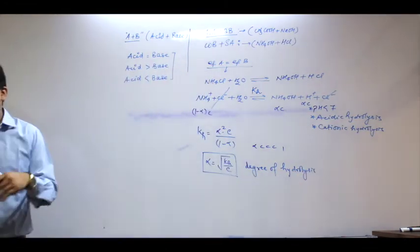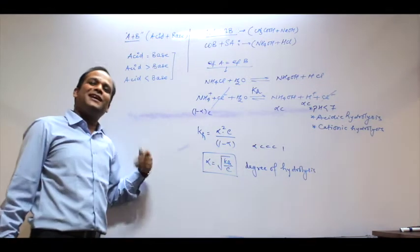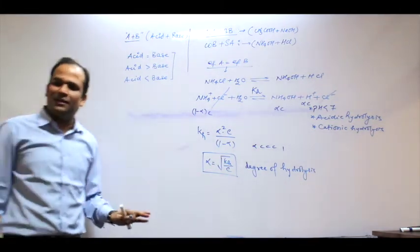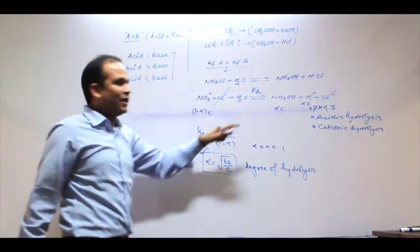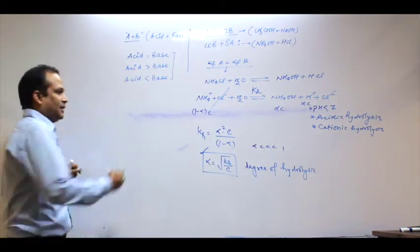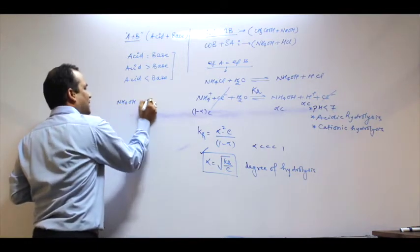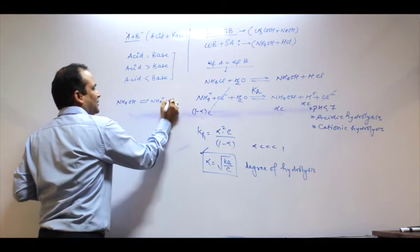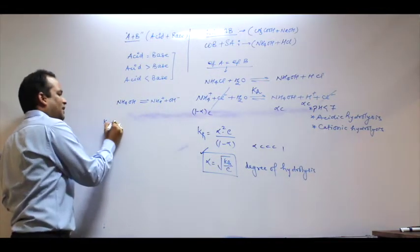Degree of hydrolysis — naam change karne se kuch nahi hota, cheez wahi hai. So alpha is derived. For NH4OH, the weak base, the relevant constant is Kb.